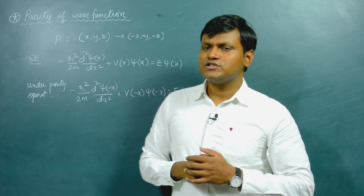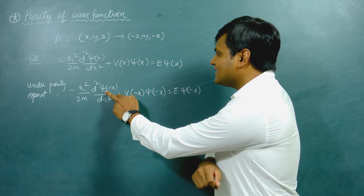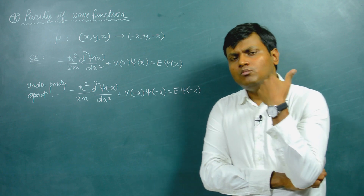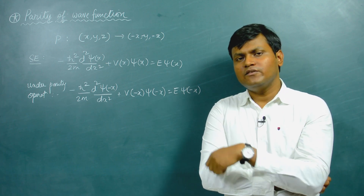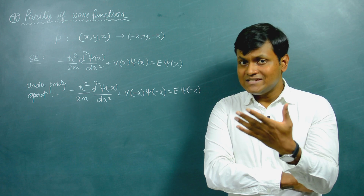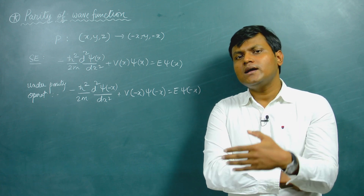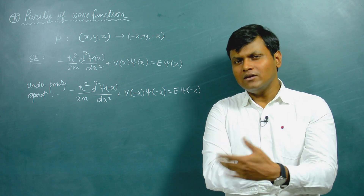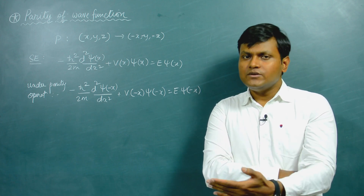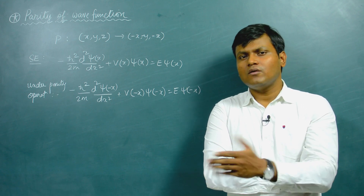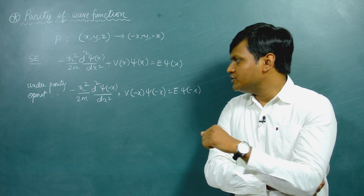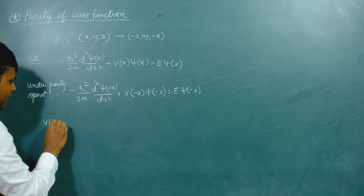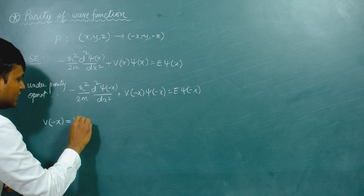Now, both of these two equations are different because instead of ψ(x) you have ψ(−x), and instead of V(x) you have V(−x). Most of the times when dealing with different kinds of interactions, the potentials we encounter share a symmetry with respect to parity operation. Most potentials are symmetric with respect to reflection of the coordinate axes at the origin, so they satisfy V(−x) = V(x).